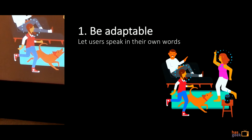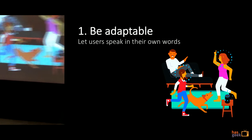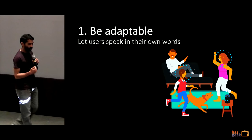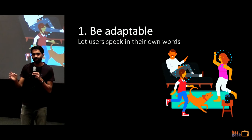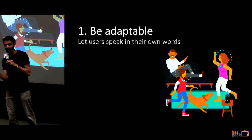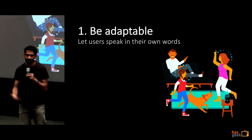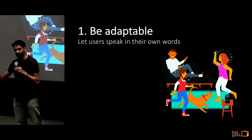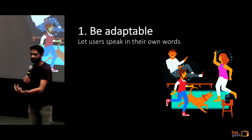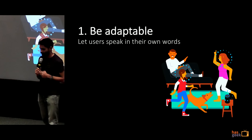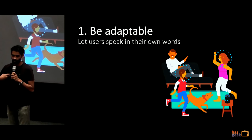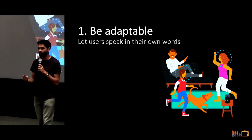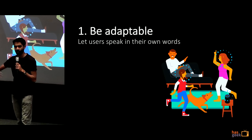The first voice design pattern is called being adaptable — letting users speak in their own words. When designing for a screen, you as the designer decide what the user sees. You might change a button color to orange and write 'buy' instead of 'ok' to increase click-through rate by 30%. You decide what the user sees, and the user has to learn that interface. With voice it's the opposite — the user will say whatever they want, and it's up to you as the designer or developer to be adaptable to what the user said.